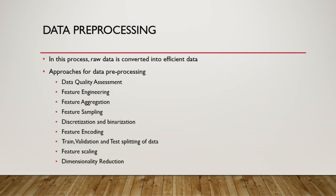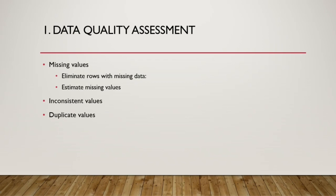The first technique is data quality assessment, where we broadly handle three things. First: missing values. In most datasets, some column values are missing. Sometimes we can go back to the source and ask why a value is missing, but in many cases that's not possible. We have two options: we can eliminate the records or features with missing data, but that risks losing important information.